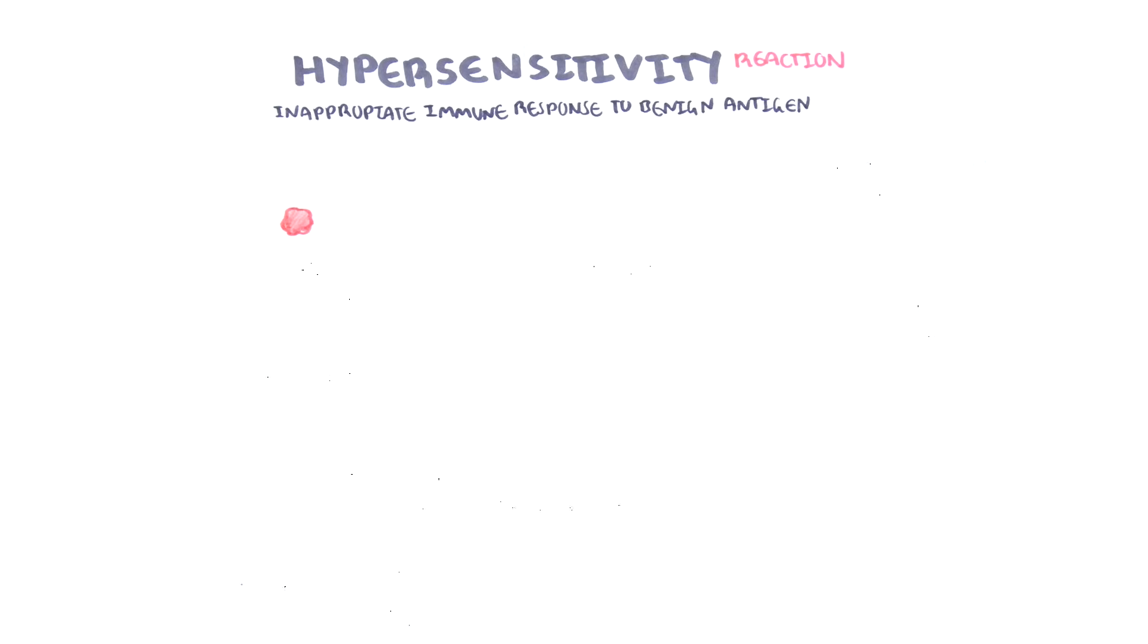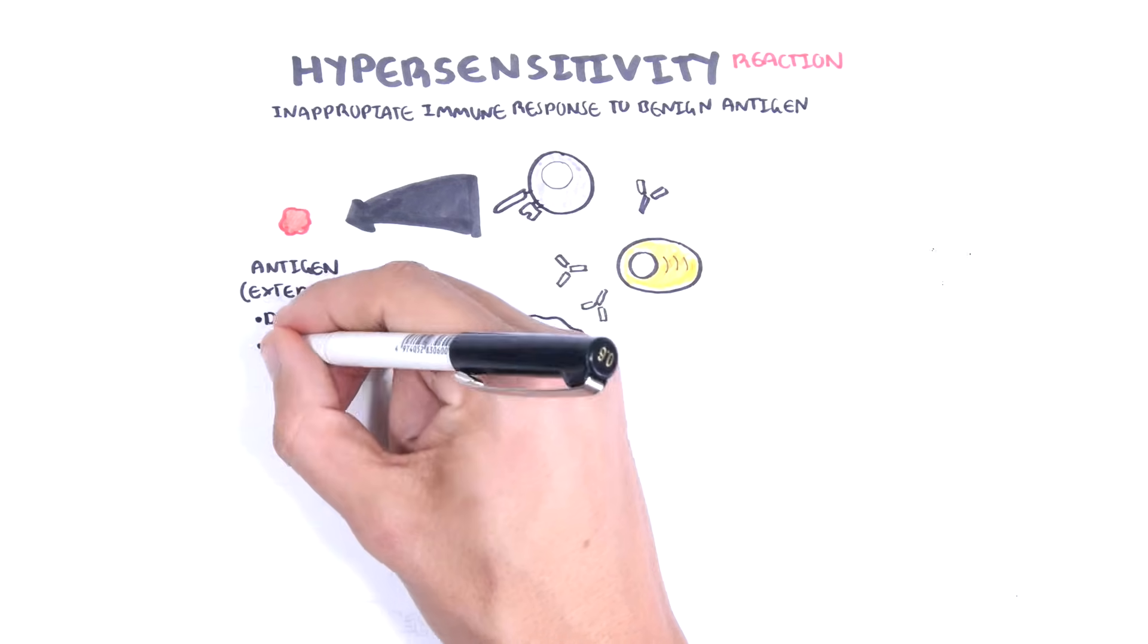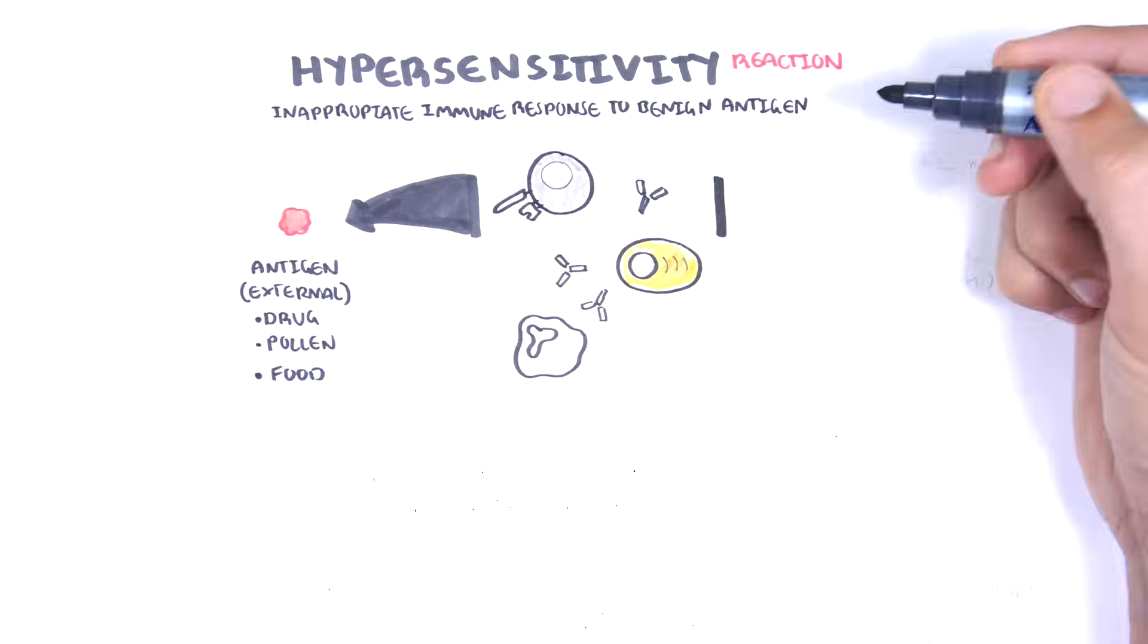It is the immune response and not the antigen that is actually harmful. An external antigen, such as a drug, pollen, or food, can elicit an inappropriate immune response.